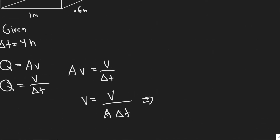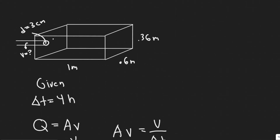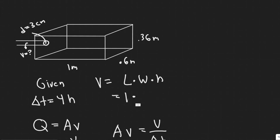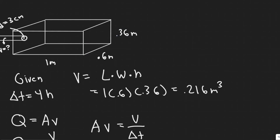Starting with the volume of the tank — volume per amount of time. To find the volume of a rectangular box, it's just length times width times height. That's going to be 1 meter times 0.6 times 0.36. Plugging this in, you get that the volume is 0.216 cubic meters, since we're using meters for all dimensions.